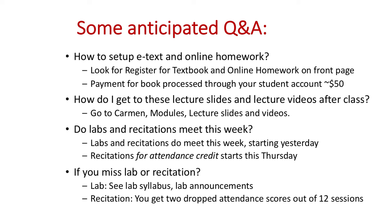How to set up your e-text and online homework access: go to the front page of Carmen and look for Start of Term Tasks. Within that link you'll find the register for online homework information page. There's a code within a file that you need to copy and paste as you're setting up your access. The payment for the book is processed through your student account — it's about $50 for the semester. You get access to these slides, and as we go through other chapters, they'll be posted as well. Usually I post an entire chapter together a day or so before we begin that chapter in class.